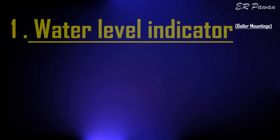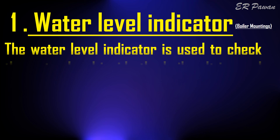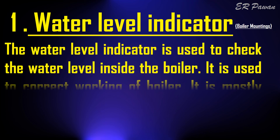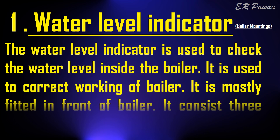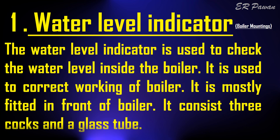Water level indicator. The water level indicator is used to check the water level inside the boiler. It is used for correct working of the boiler. It is mostly fitted in front of the boiler and consists of three cocks and a glass tube.